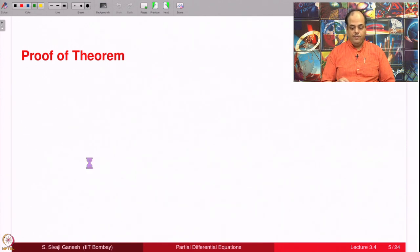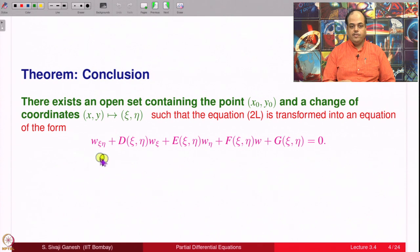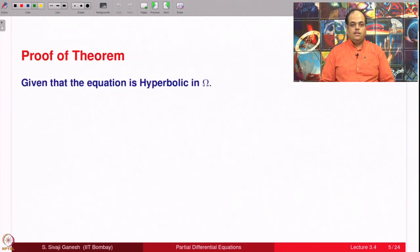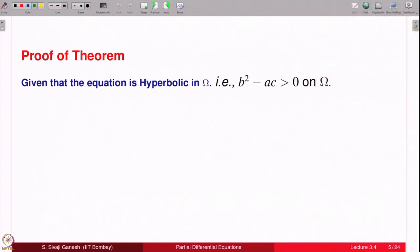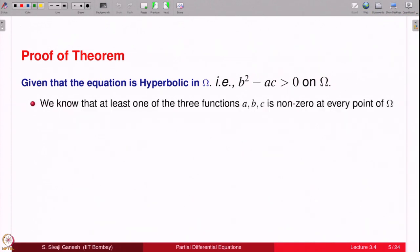The wave equation is u_tt minus u_xx, we will come back to that later. Given that the equation is hyperbolic — that is, B²-AC is positive at every point of omega — we know that at least one of the three functions A, B, C is non-zero at every point. We have to add the assumption that none of the three functions A, B, C simultaneously vanish. That is an important assumption which we now add.